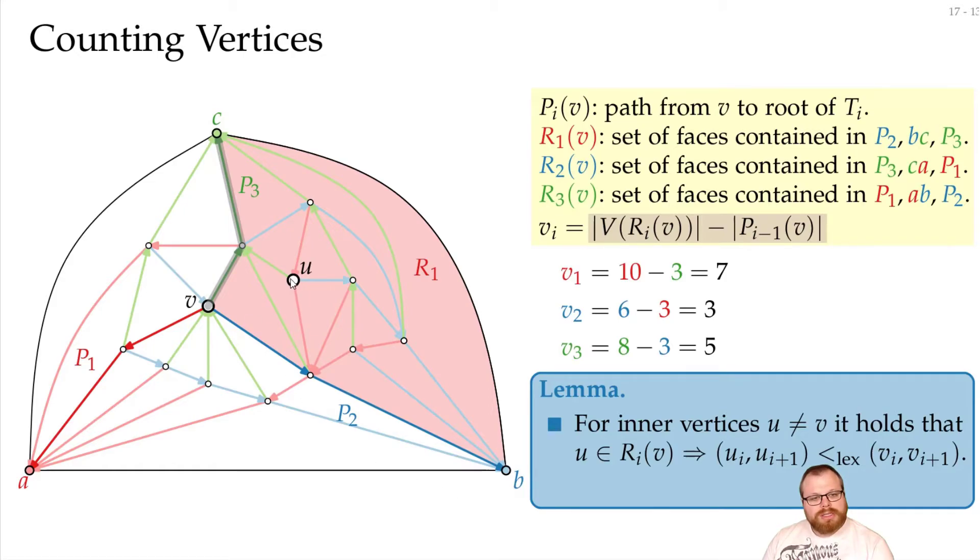And now u also lies on path P_3. So if we just add up the number of interior vertices and the vertices on path 2, that cannot be more than we had before at v. The same also happens if u lies on P_2 here. Even if we only cut off the minimum amount, this one, now u will also be on path P_3. So we will remove it from this part. So it only gets smaller.